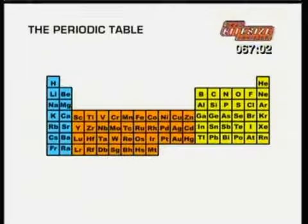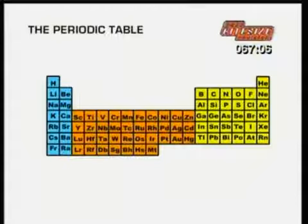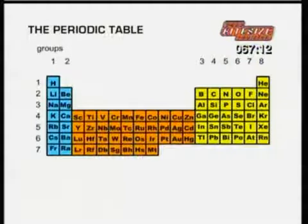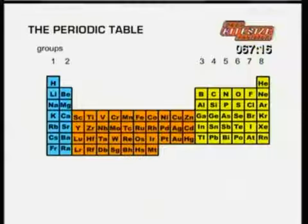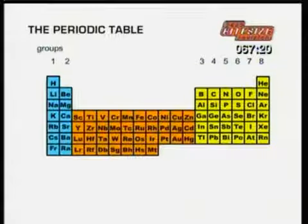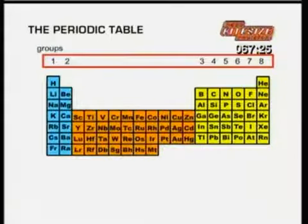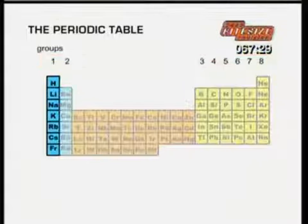The elements are laid out in the periodic table in order of increasing atomic number. The table is arranged in groups up and down the table, and periods across the table. Each group contains elements that have the same number of electrons in their outer shell. The main groups are numbered from group 1 to group 8, sometimes called group 0.